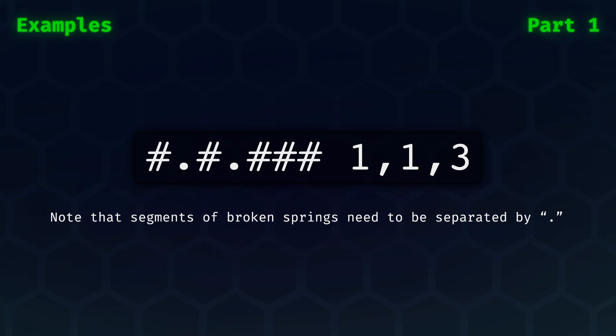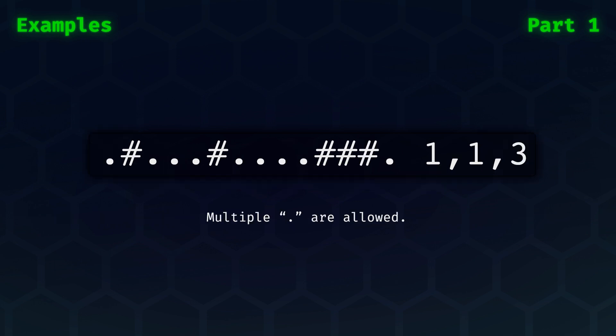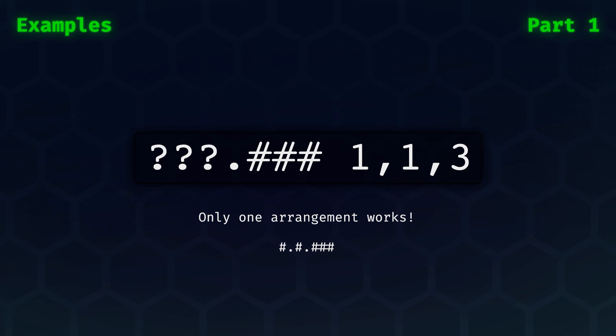Note here that groups must be separated by one or more dots. Here is a very similar example, where we simply have multiple dots in between the groups. Here is the first example again, but with three unknowns at the start. Still, we need to place the three groups of broken springs. Do you see why only one arrangement works?